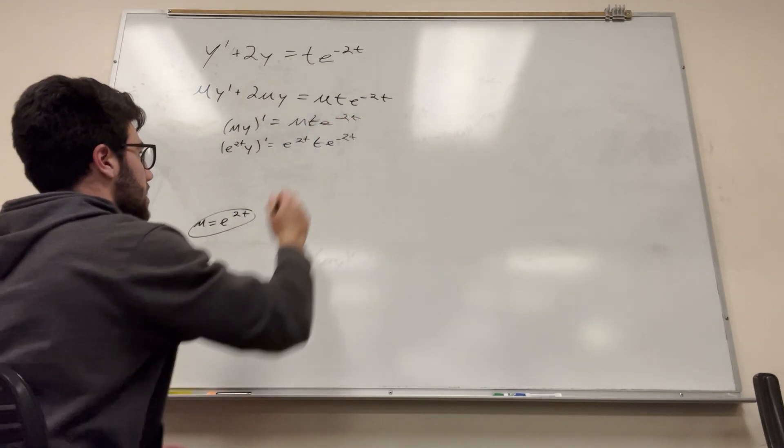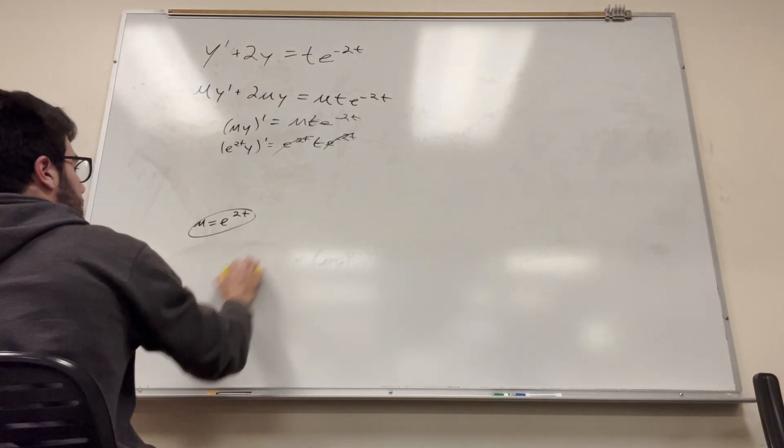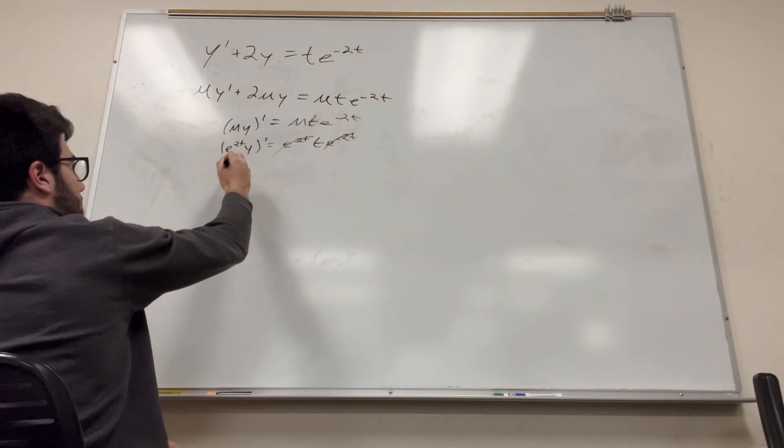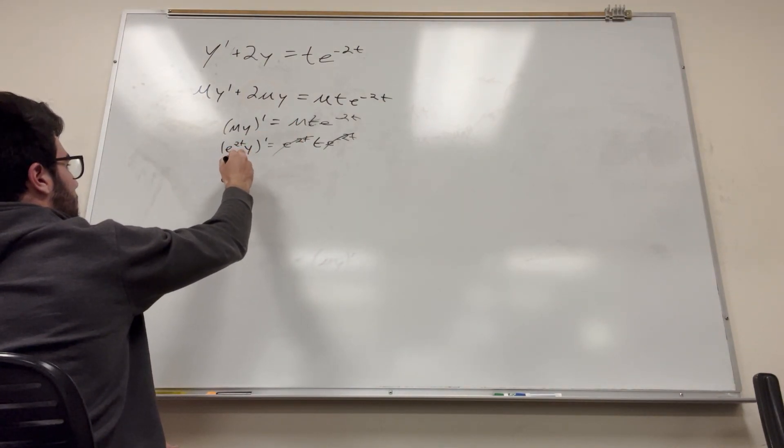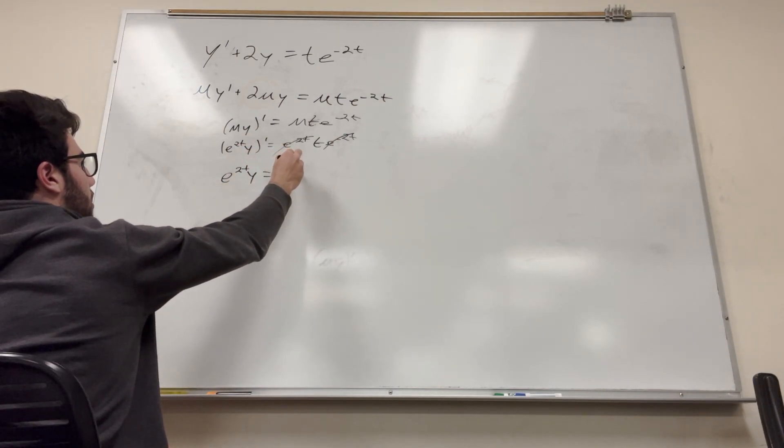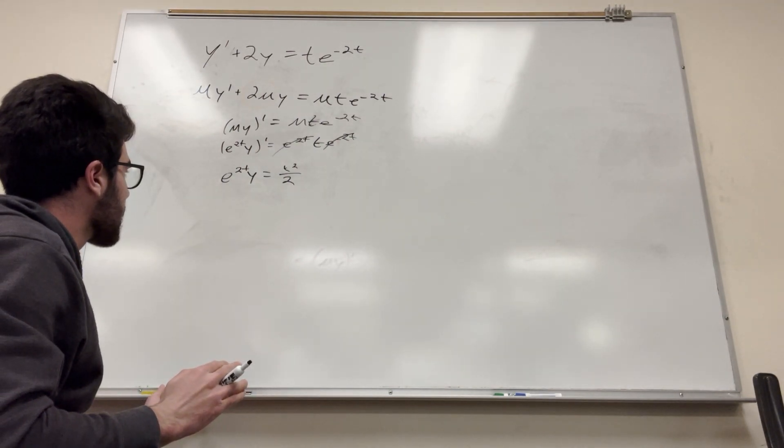And as you're going to notice, boom, boom, those are just going to be equal to 1, right? Pretty cool. So then we're just going to take the integral of both sides. So this is just going to be the same thing, except without the prime. So e to the 2t y is equal to t squared over 2.